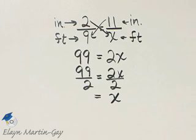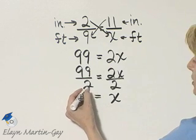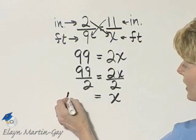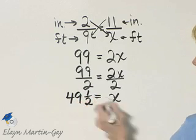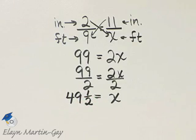The left side, 99 over 2, let's go ahead and write that as a mixed number. 2 divides into 99, 49 times, with a remainder of 1. So that's 49 and 1 half.